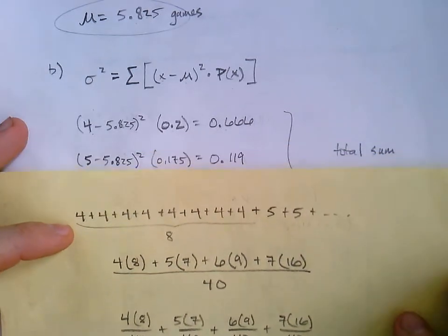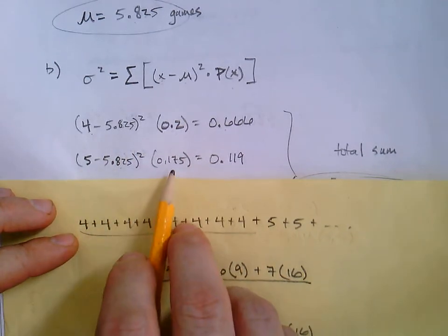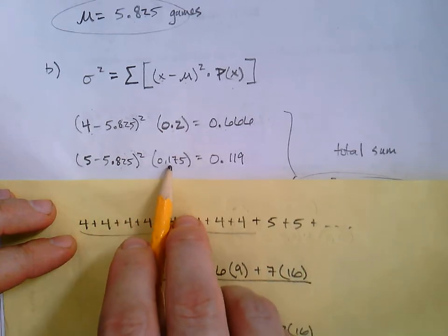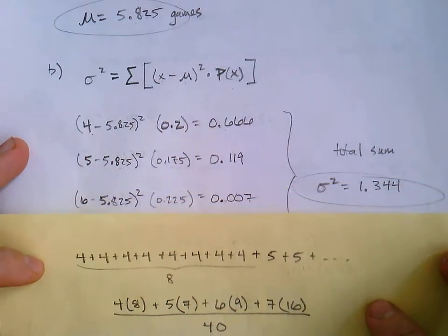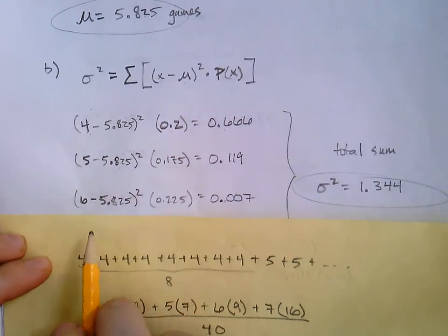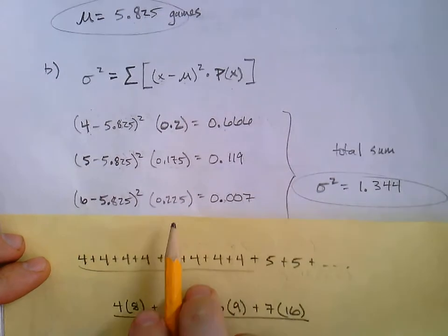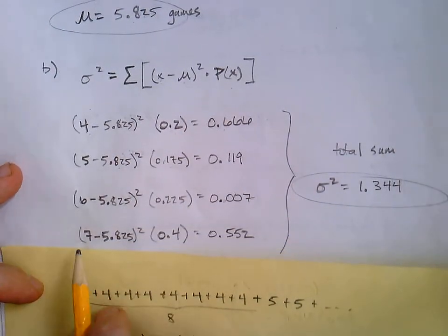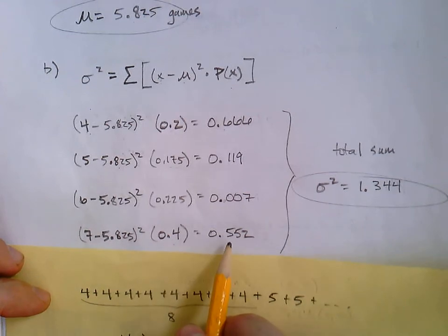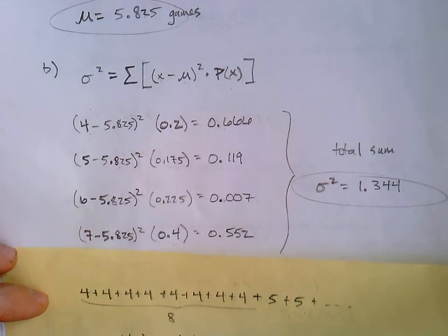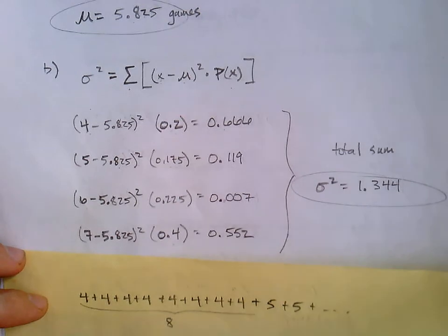Then we're going to move on to the next x value. Do the same thing. Subtract the mean. Square that. After you subtract, then multiply by the probability that goes with 5. And I got 0.119. I encourage you, double check my numbers here. You never know. And it's just good practice for you. Then we'll move on to 6. Subtract the mean. Square it. Multiply it by the probability that goes with 6. I got 0.007. And finally, you can use 7, x equals 7. Subtract. Square. The probability that goes with 7. I got 0.552. And then all you got to do is add all these up. That's what that sigma in the front is telling you. Once you have these, add them all together. And that is your variance.